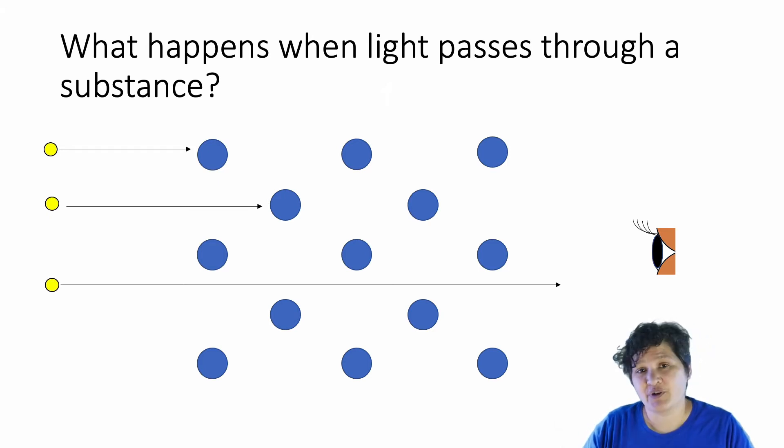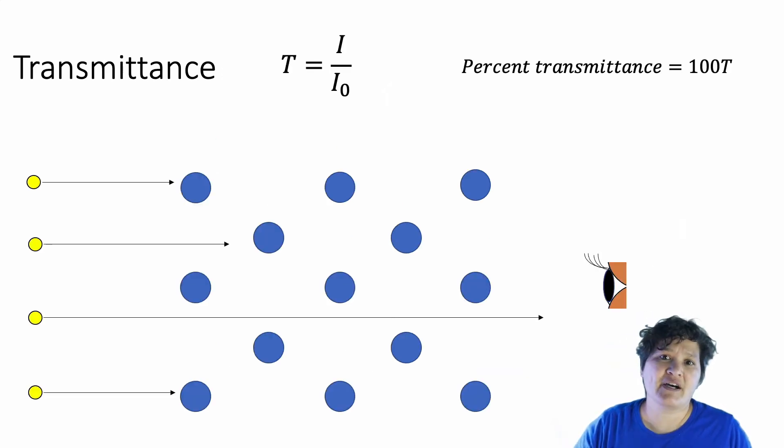In other words, if you put in a certain number of photons, you're going to get a smaller number of photons out. Transmittance is defined as the ratio of the intensity of light leaving the substance, divided by the intensity of light entering the substance. So in this cartoon, we have four photons entering the substance, but only one coming out. So our transmittance is one, which is what's coming out, divided by four, which is what went in. And we also sometimes talk about the percent transmittance, which is just the percent of the original intensity that exits the substance. Here, that's one fourth or 25 percent.